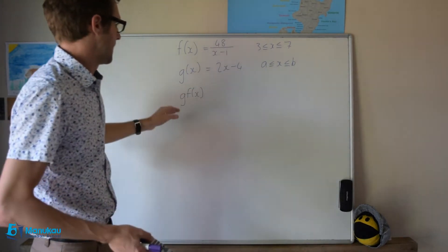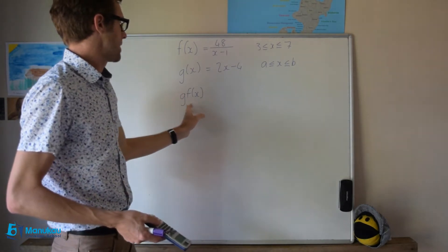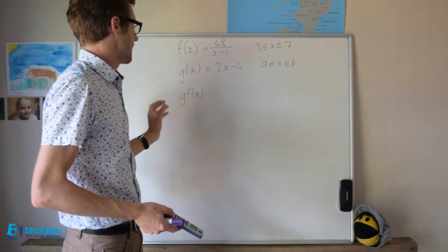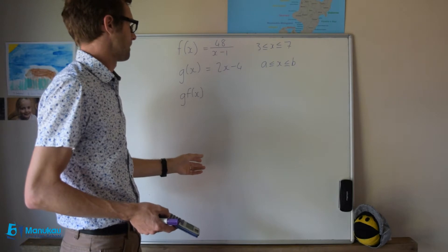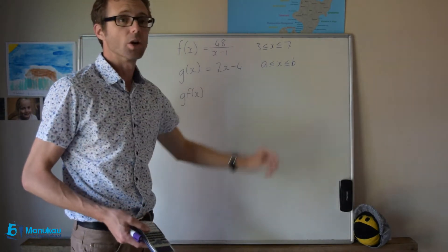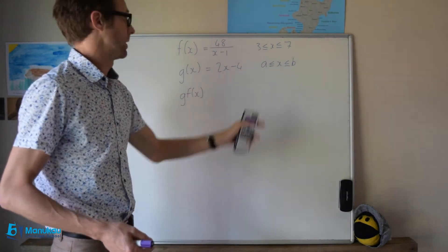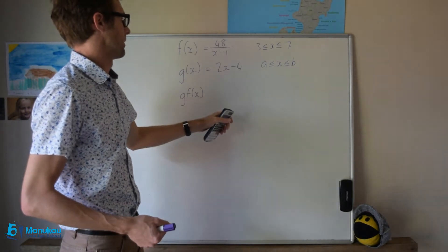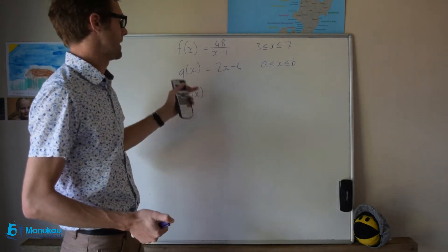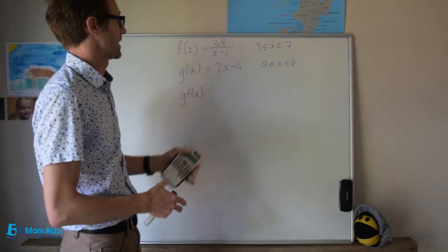Now, if we have the composite function gf of x, what are a and b going to be? In other words, the minimum that we can chuck in here and the maximum we can chuck in here.